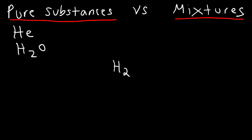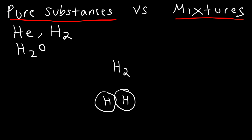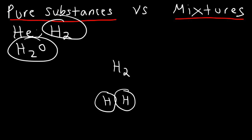What about hydrogen gas — is that a pure substance or a mixture? Hydrogen gas is a pure substance. Like helium, it's a pure element. However, it's slightly different: helium is composed of single individual atoms, while hydrogen gas is composed of molecules. A molecule is a substance that has multiple atoms, so water is a molecule and hydrogen gas is a molecule.